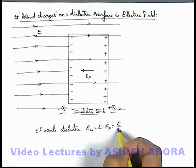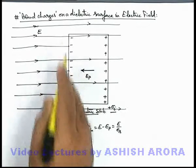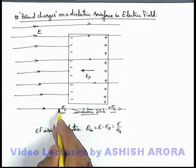Which is deciding the amount of electric lines which are permitted into the dielectric medium, remaining are terminated on the bound charges on the surface.